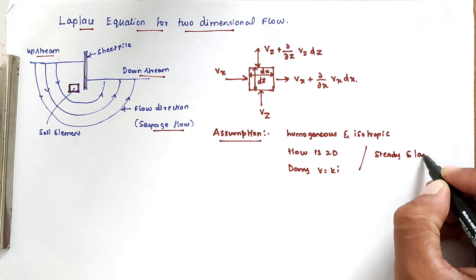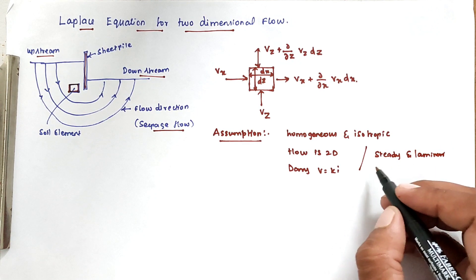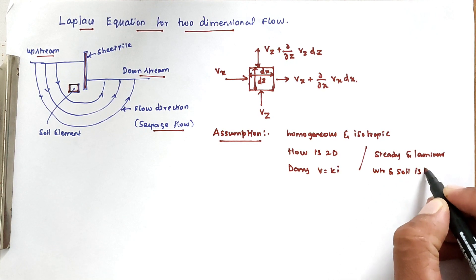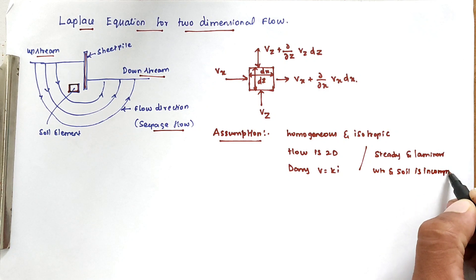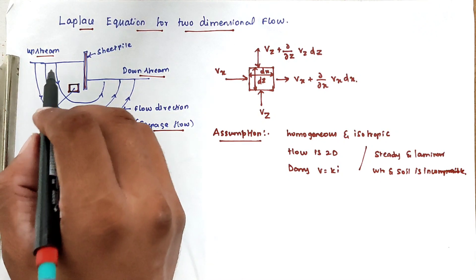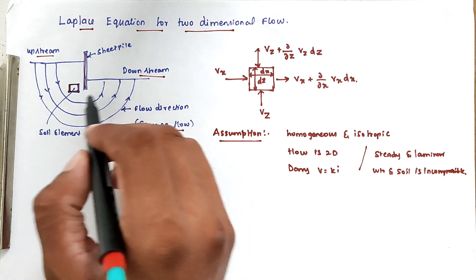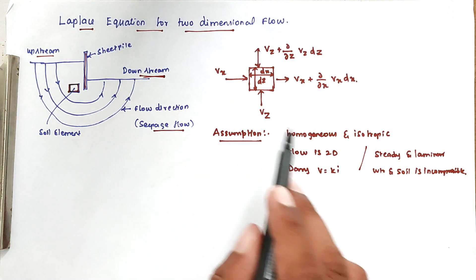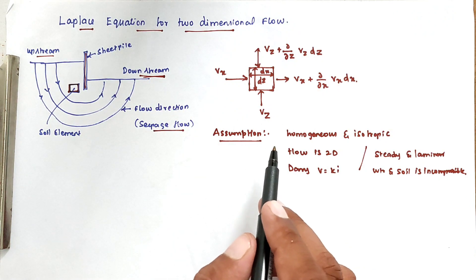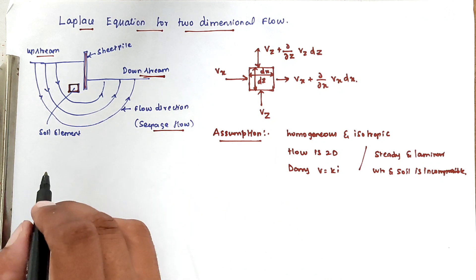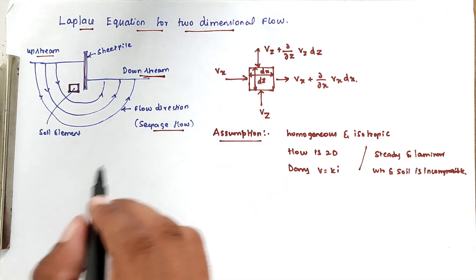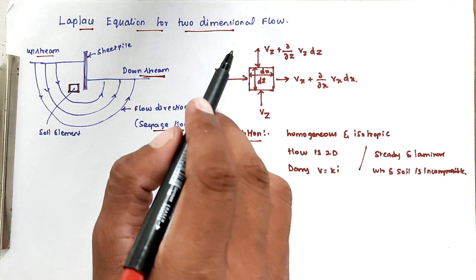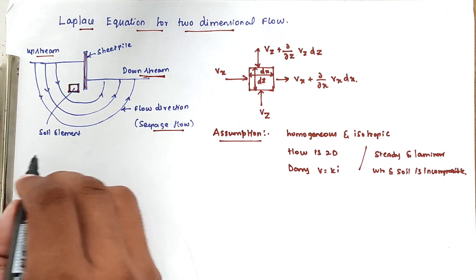The flow is steady and laminar, and water and soil are incompressible. Whenever water moves in a direction, it will not compress — it will directly come out in the same direction. These are all the assumptions made by Laplace. Now we consider a small element dx, dz, and dy, where the dy direction is along the length.